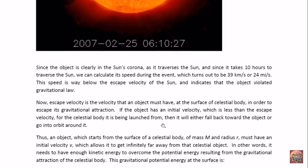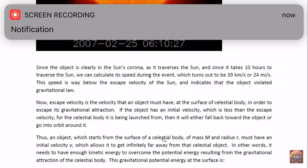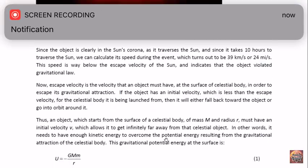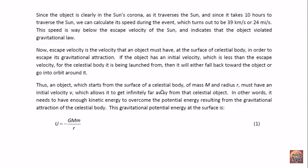Now escape velocity is the velocity that an object must have at the surface of a celestial body in order to escape its gravitational attraction. If the object has an initial velocity which is less than the escape velocity for the celestial body it is being launched from, then it will either fall back toward the object or go into orbit around it. In other words, it needs to have enough kinetic energy to overcome the potential energy resulting from the gravitational attraction of the celestial body.